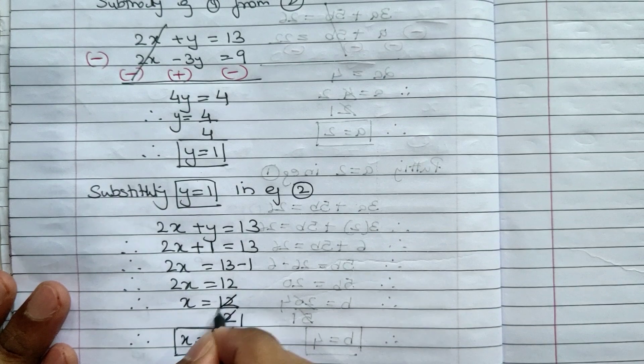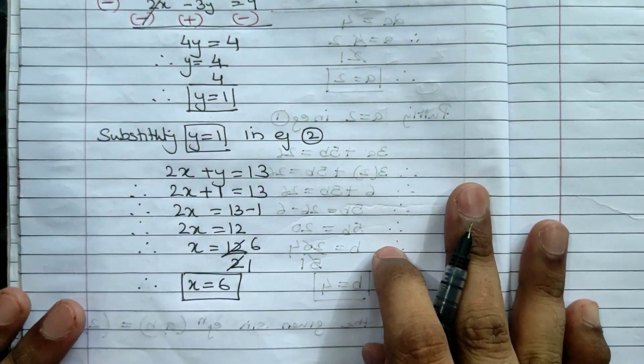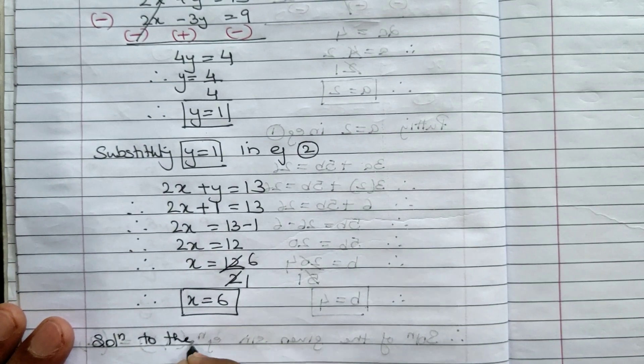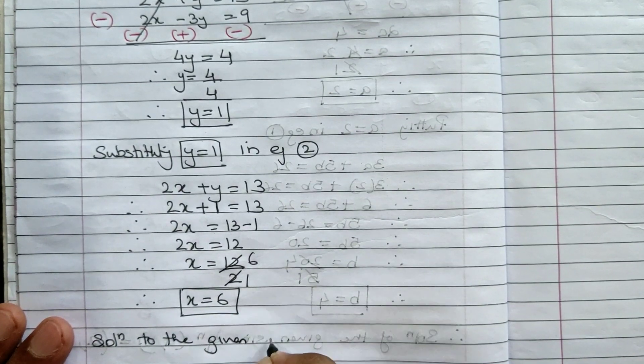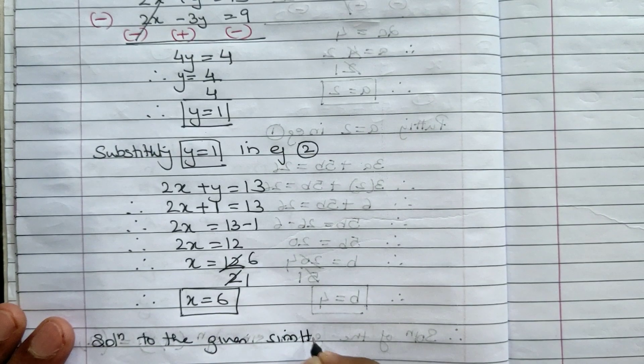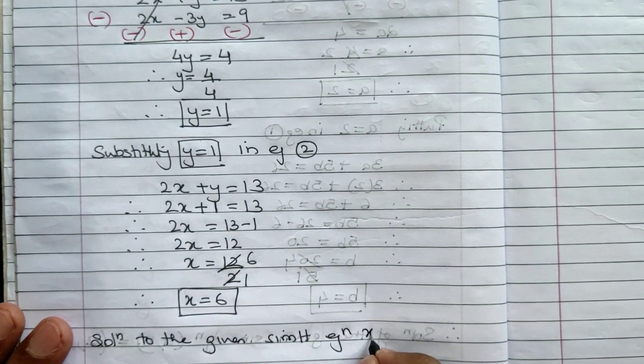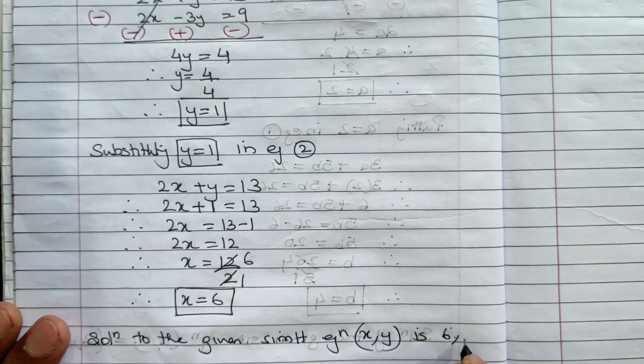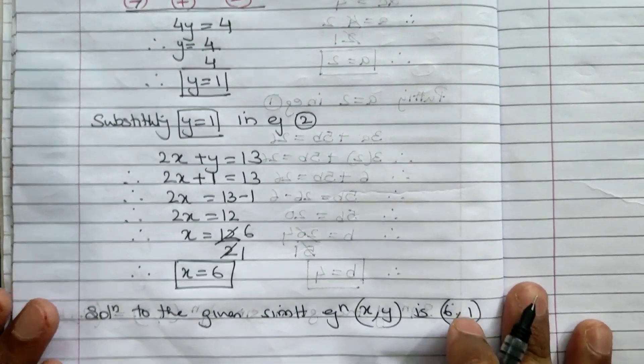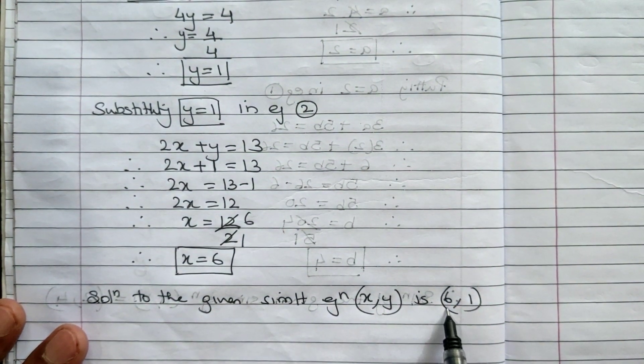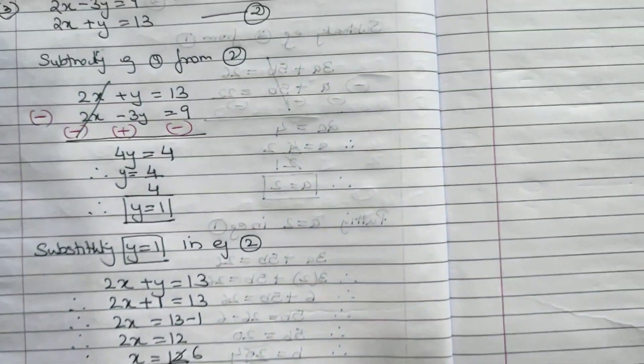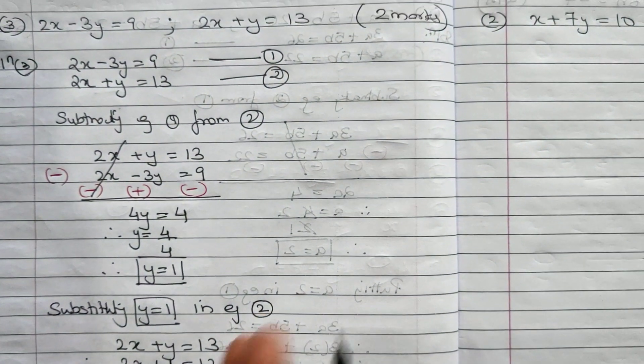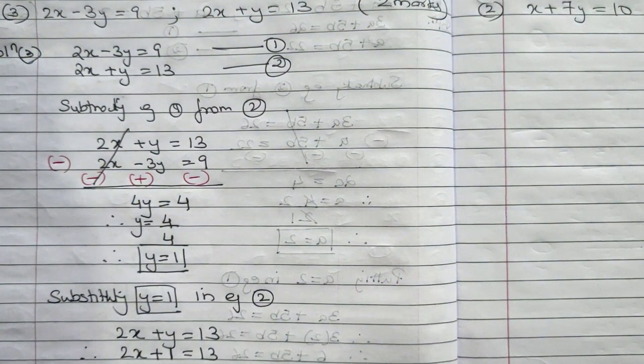So my final answer - I will write the solution to the given simultaneous equation x comma y is 6 comma 1. So this is a very simple sum. Sum number 1 and sum number 3 are similar. I hope this is very clear.